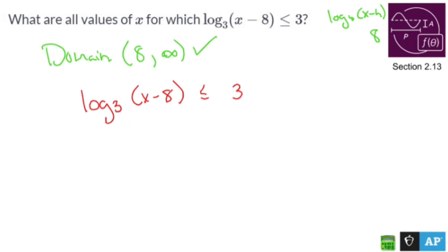I want to get rid of that log so I can have x no longer living inside of a log. So what I'm going to do is I'm going to take the three to the of both sides. Three to the log base three cancels out. x minus eight drops down. That's going to be less than or equal to three to the third which is 27.